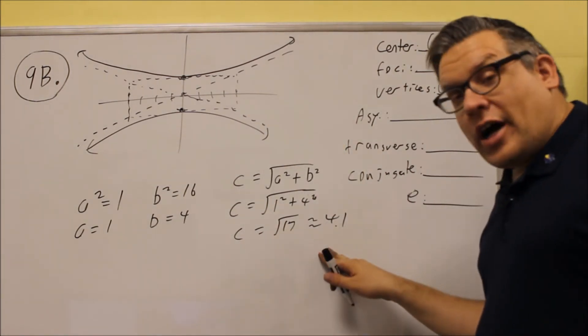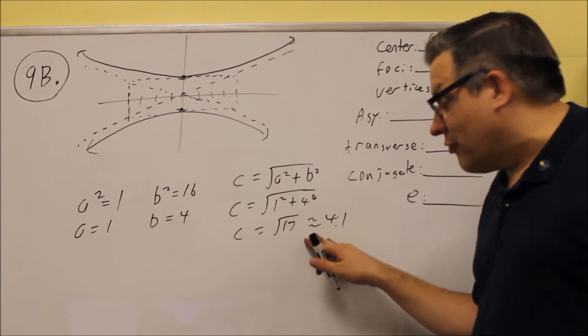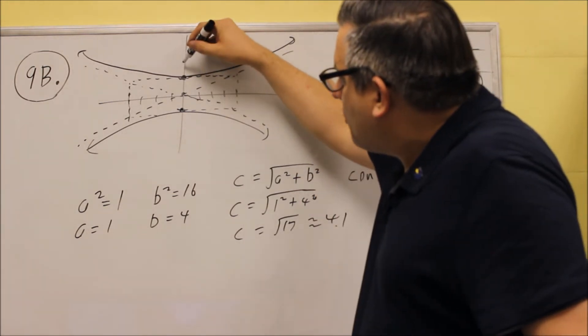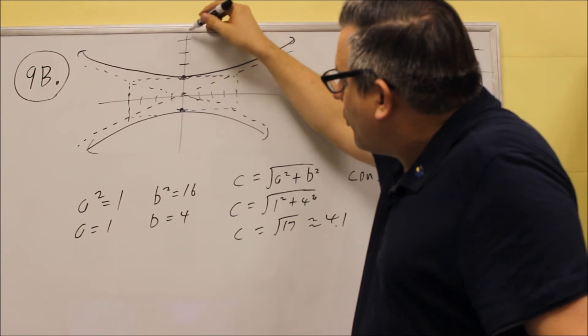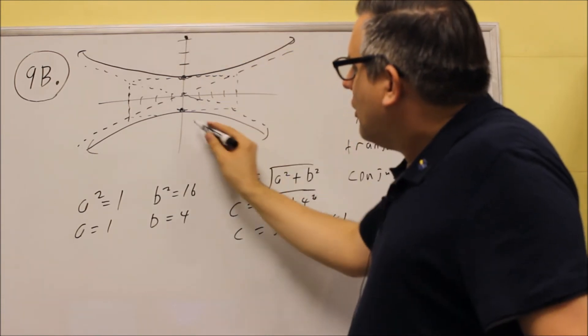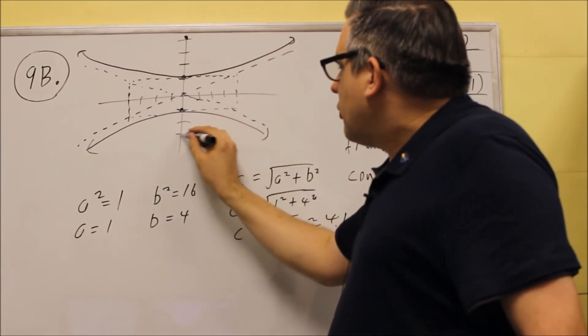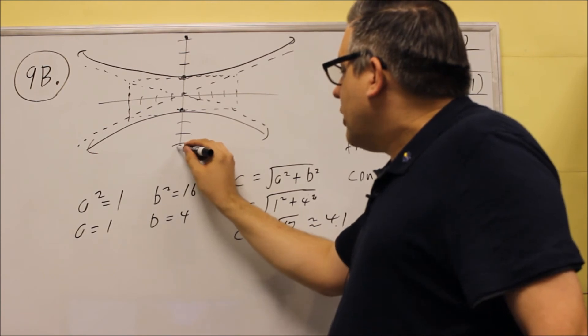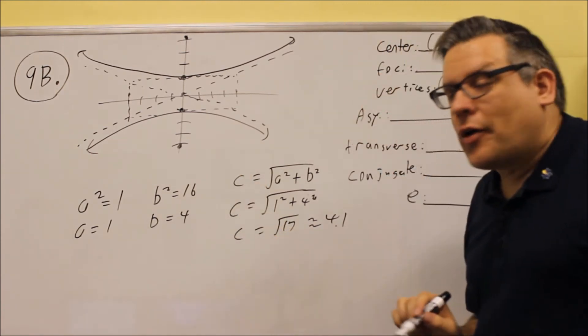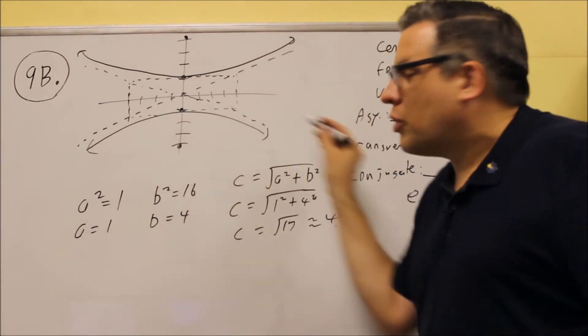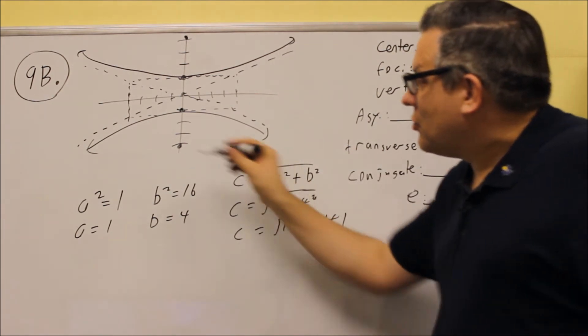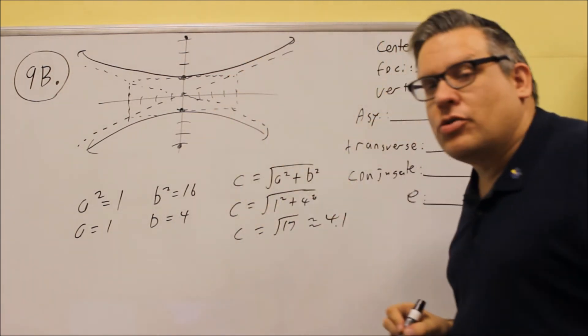For your foci, 4.1 we have for that. So, from here, we're going to go up 2, 3, 4. 4.1 is right above there. And here we go, 1, 2, 3, 4 ends up down here. Again, remember the foci has to always be inside of the curve. So, wherever the curve is opening to, that's where that's going to be included inside there.